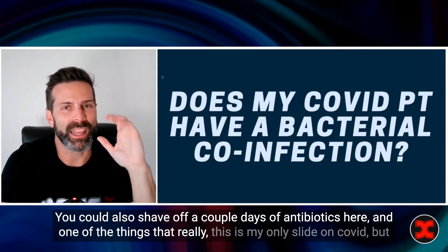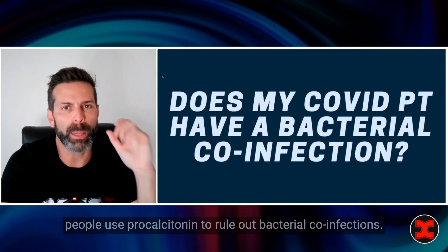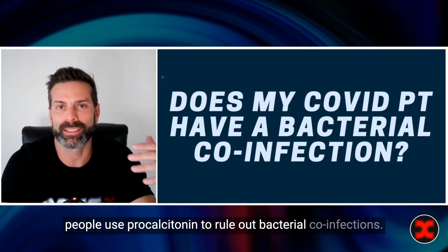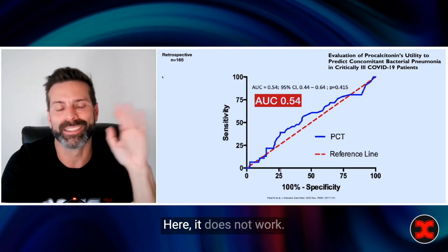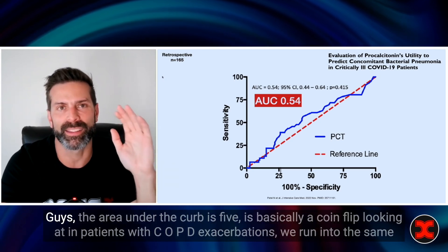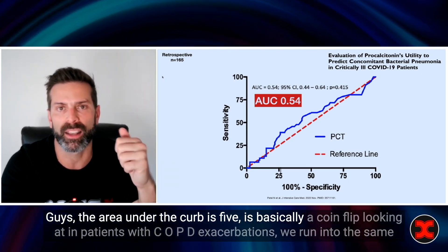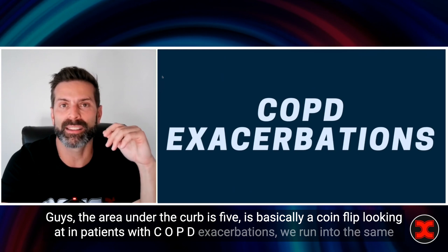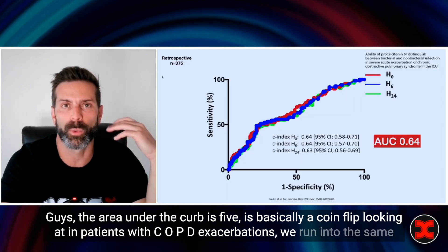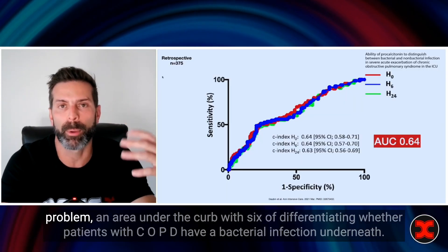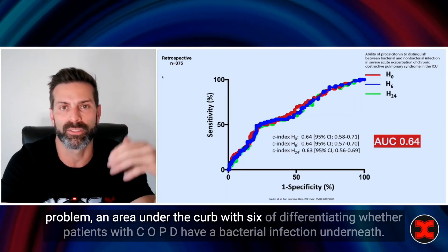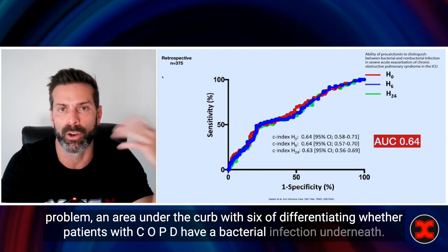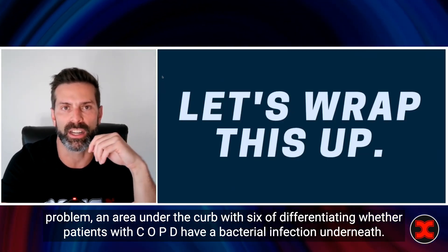One thing — and this is my only slide on COVID — people use procalcitonin to rule out bacterial co-infections in COVID. Here it does not work. The area under the curve is 0.5 — it's basically a coin flip. Looking at patients with COPD exacerbations, we run into the same problem: an area under the curve of 0.6, when differentiating whether patients with COPD have a bacterial infection underneath.